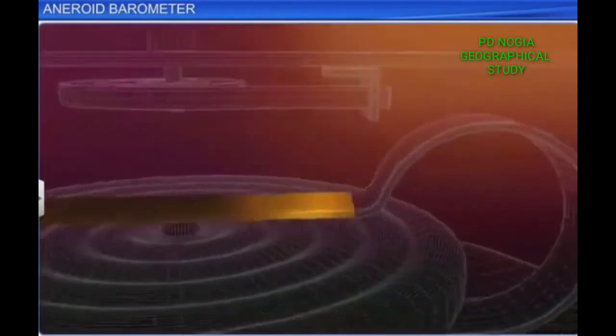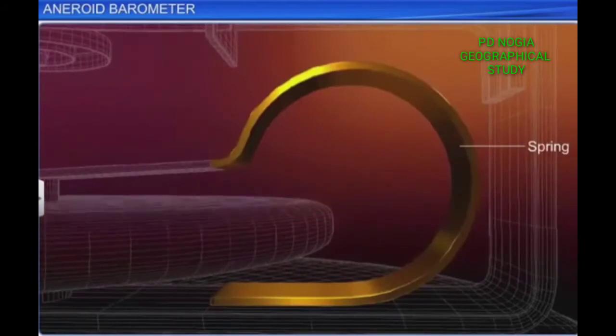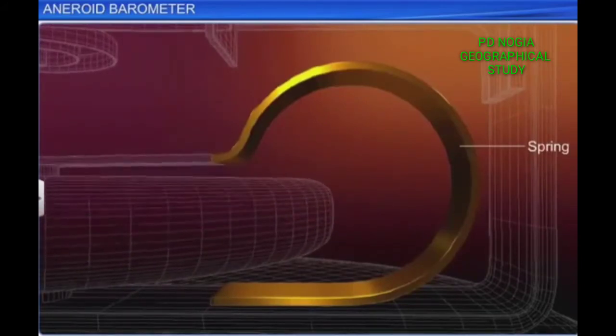One end of the central lever is connected to a spring. The spring prevents the evacuated metallic box from collapsing.